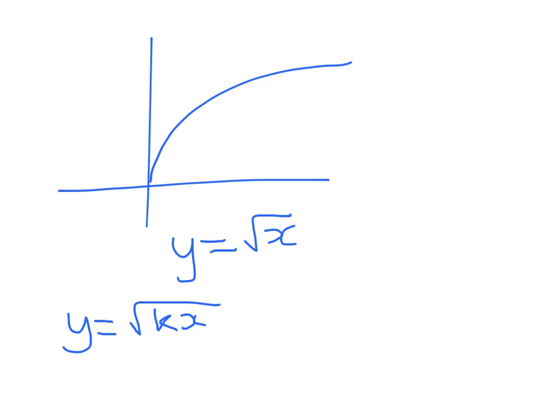y is equal to the square root of k times x. So now, as usual, we just substitute in a point from here. And I'm going to sub in 4, 4. So we get 4 is equal to the square root of k times 4. So 4 is equal to, what am I doing here?